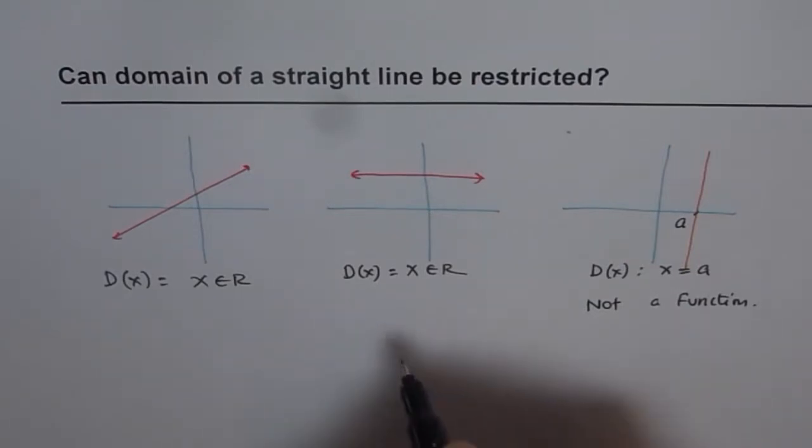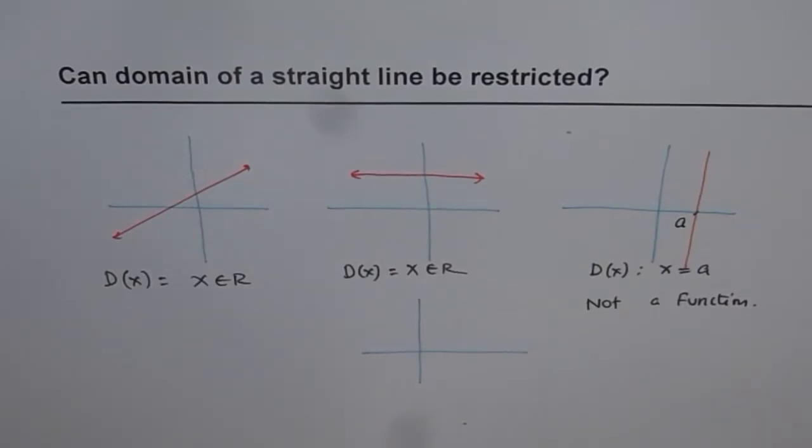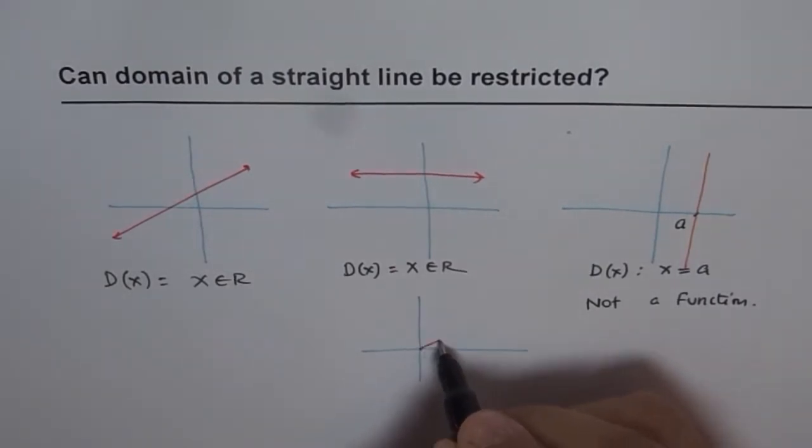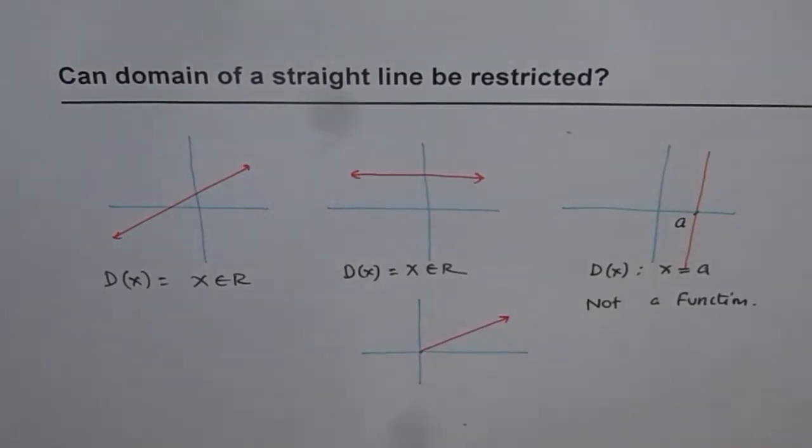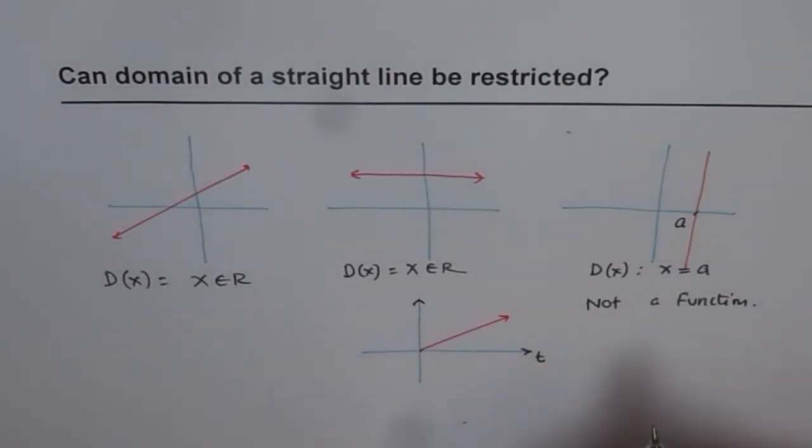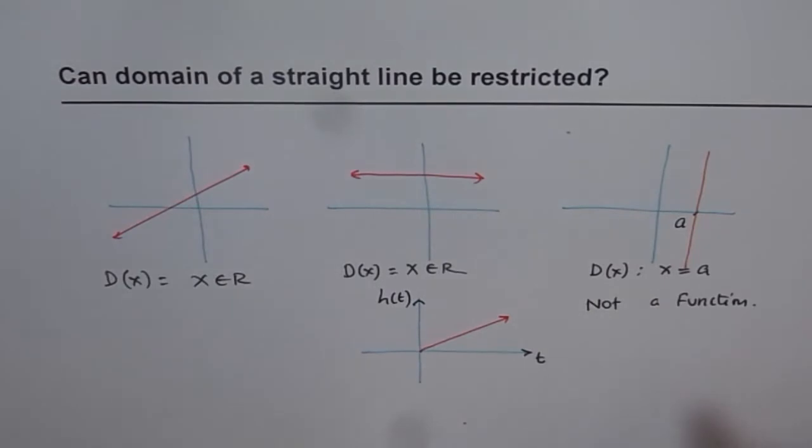And the second part is that in most of the cases, all real life examples, we always consider things like time, right? So line will be going forward from one point to the other. Let's say we consider time, and here we have let's say height of the ball when it is thrown forward. So in this case it is restricted, right?